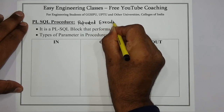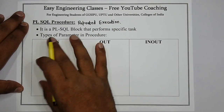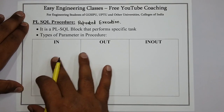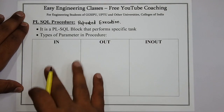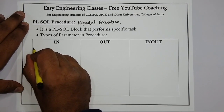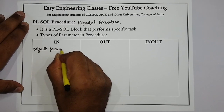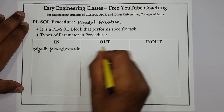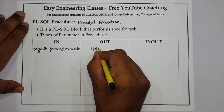It is used for repeated execution — whichever statements we need to execute repeatedly, we can use PL/SQL procedures. Now there are three different types of parameters in the PL/SQL procedure: IN, OUT, and IN-OUT. IN is the default parameter mode, so if you don't specify anything it will be IN type, whereas OUT and IN-OUT must be specified explicitly.